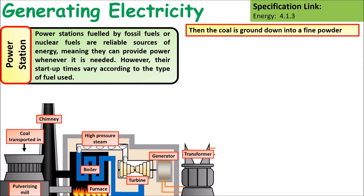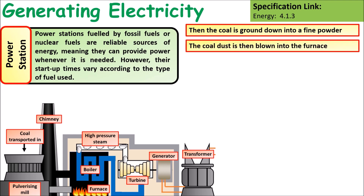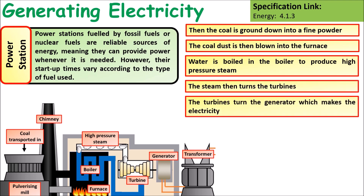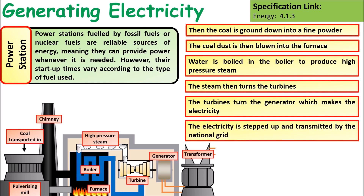In coal-fuelled fossil fuel power stations, coal is first ground down into a fine powder to increase its surface area. The coal dust is then blown into a furnace where it burns. The heat boils water in a boiler to produce high-pressure steam. That steam turns a turbine, the turbine turns the generator which generates electricity, and this electricity is then stepped up by a transformer and transmitted around the national grid.